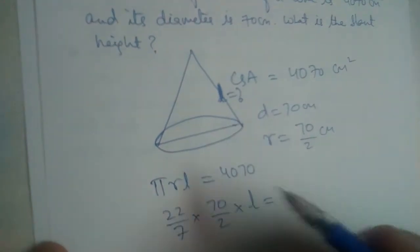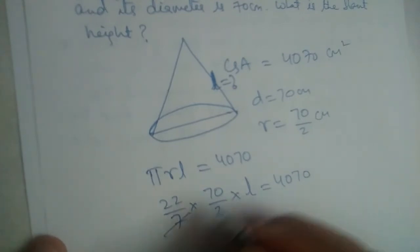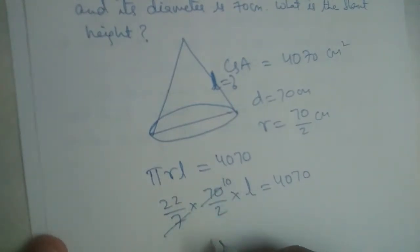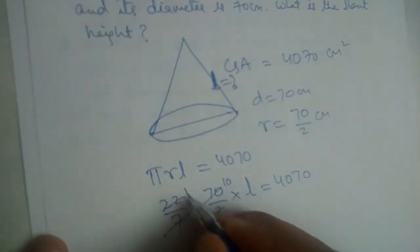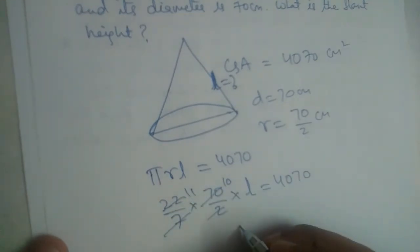So 4070 - this will go 10 times, this will go 11 times. 11 into 10 is 110.